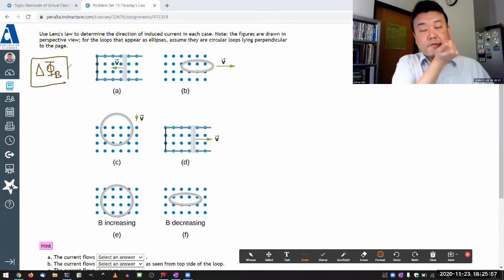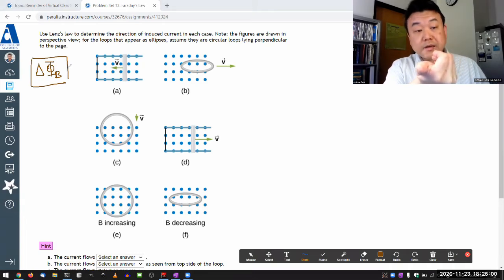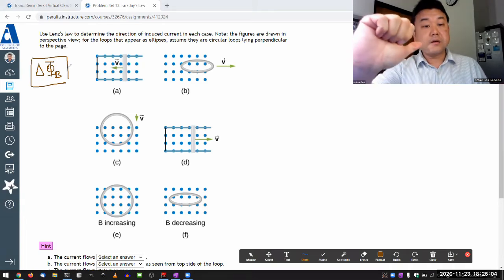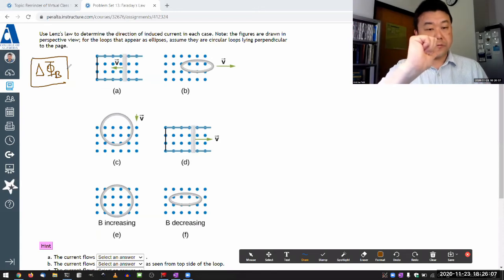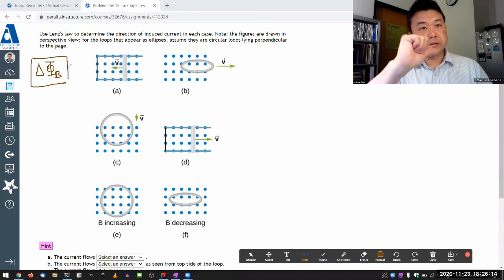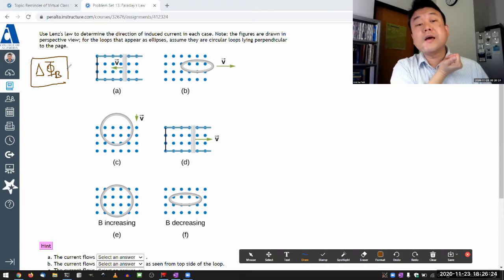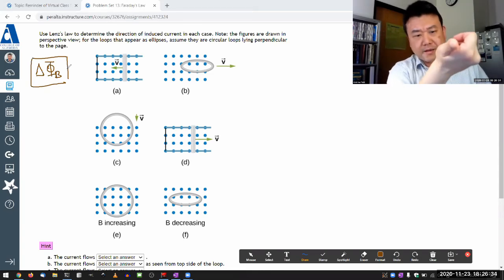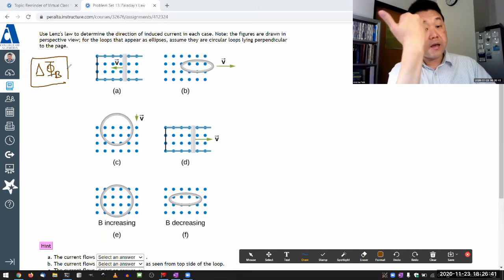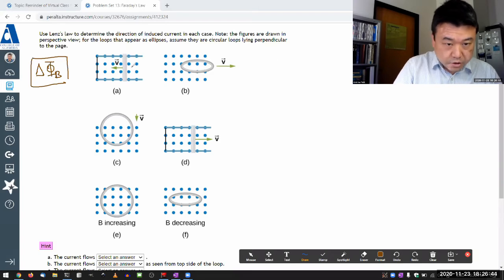For A, with the magnetic field pointing out and the area decreasing, the direction of change of magnetic flux is into the screen. So the current that's induced in the loop is going to generate magnetic field that opposes this change. So the magnetic field due to the induced current needs to point out of the screen, which means the current will flow in this direction. This is me applying the third version of right hand rule, where my thumb points in the direction of magnetic field, then the way my fingers curl gives me the direction of current. So the current should be flowing in counterclockwise direction.